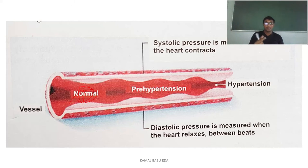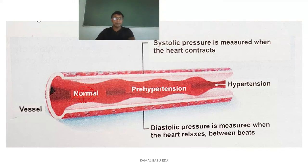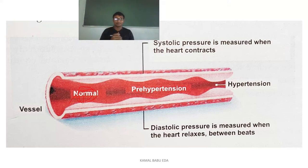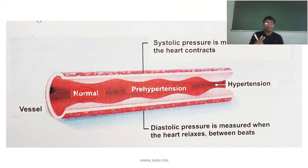Coming to pre-hypertension, you can see a vascular bed change — there is a complete change in the vascular bed compared to the normal. We measure systolic blood pressure when the heart is contracting, and diastolic blood pressure when the heart relaxes or in between the beats. In hypertension, the arterial blood flow has completely changed — the pathway has become more narrow.